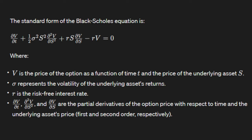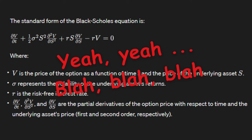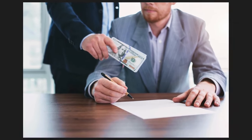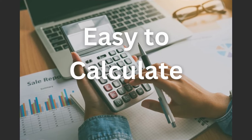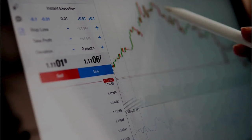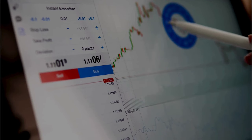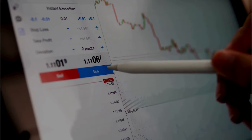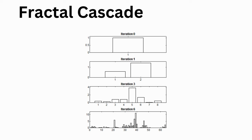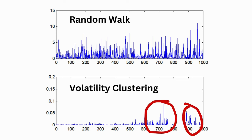The reason the Black-Scholes-Merton equation relies on bell curve statistics is that it does so in order to make it solvable. This is principally why it has been so influential — because of this relative simplicity and its closed-form solution, which provides a quick, simple, and admittedly powerful means for pricing options. However, the best way to model how real financial markets fluctuate is not via a random walk, but by what is called a fractal cascade model, which is a means of simulating volatility clustering.